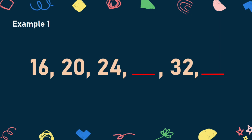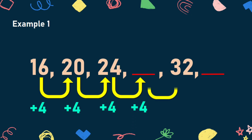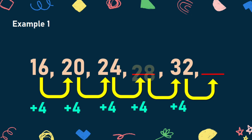Look closely at this example. In this number sequence, we notice that each term is formed by adding 4 to the preceding number. 16 plus 4 is equal to 20. 20 plus 4 is equal to 24. Thus, we need to add 4 to 24 to get the missing term, and likewise for the remaining terms. Therefore, the missing terms are 28 and 36.